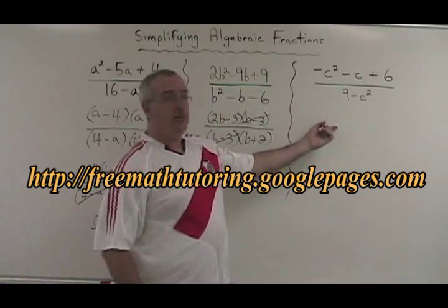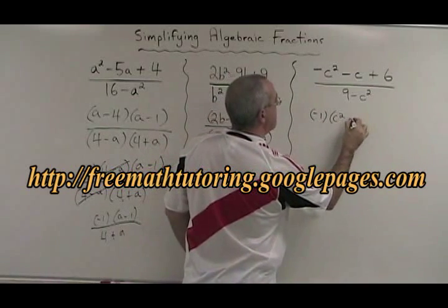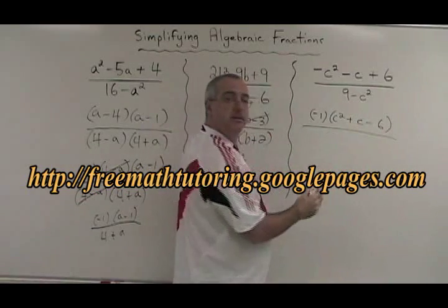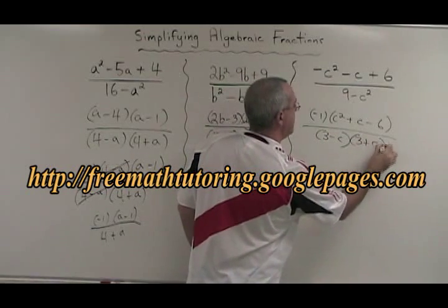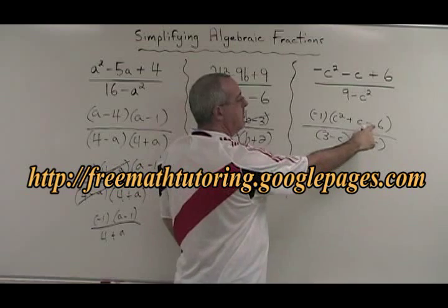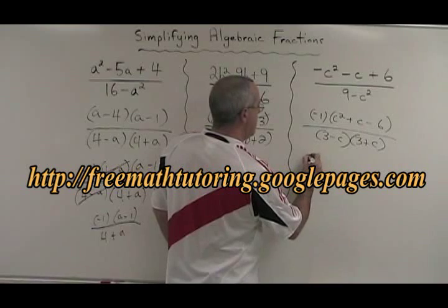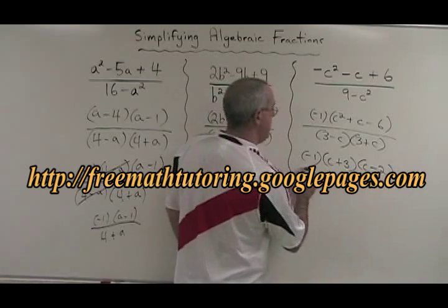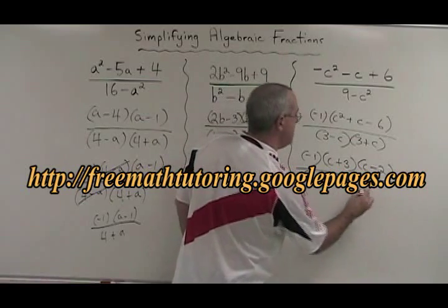The last example. In the numerator, I start by factoring out a negative 1, and I get C squared plus C minus 6. The denominator is the difference of squares — it factors to 3 minus C times 3 plus C. After taking out the negative 1, I apply the simple trinomial method: which two numbers multiply to give negative 6 and add to give positive 1? That will be 3 and negative 2. I end up with negative 1 times C plus 3 times C minus 2 in the numerator, and 3 minus C times 3 plus C in the denominator.